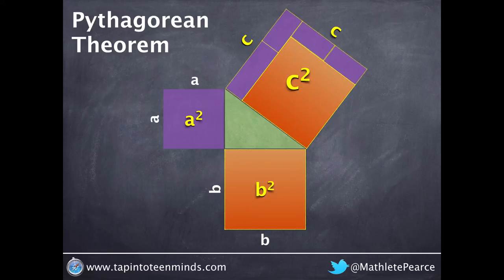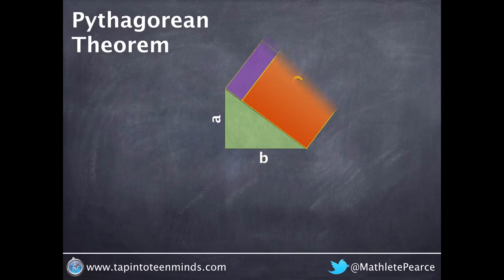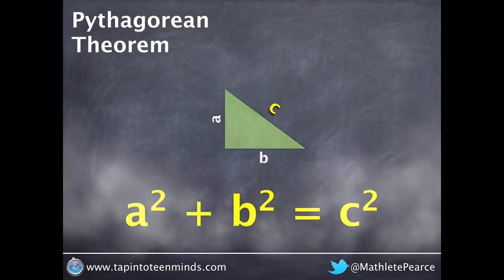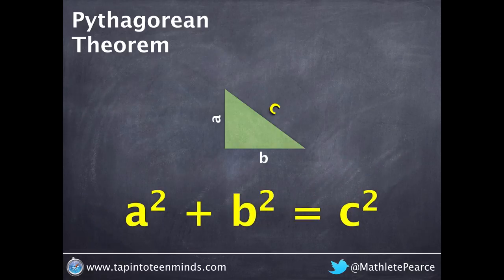In summary, since the hypotenuse squared is equal to a squared plus b squared, we also can write this as a squared plus b squared equals c squared.